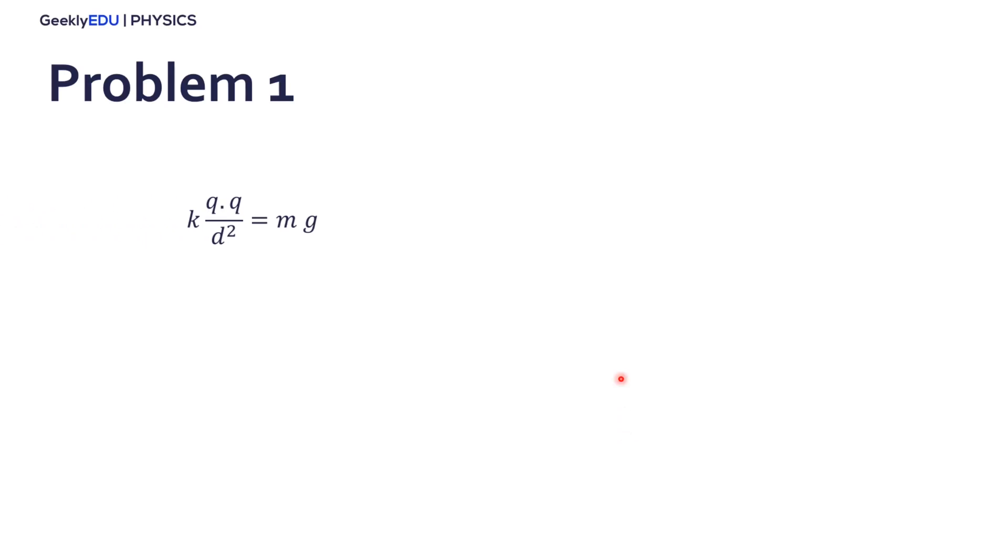From here we know that there are two protons, so the charges are the same, and we can rearrange it to isolate the distance. So I'm just passing distance to the other side, and we reach this equation here.